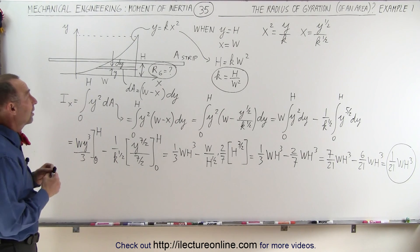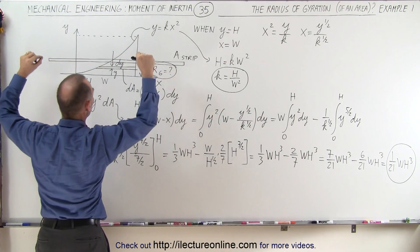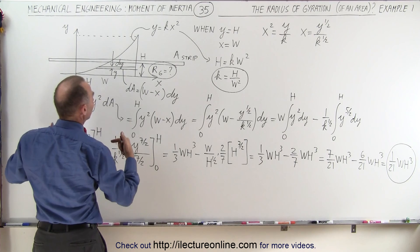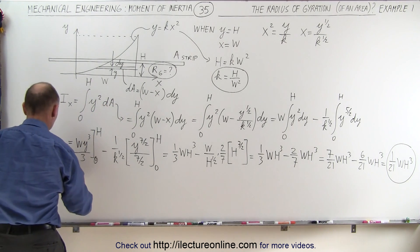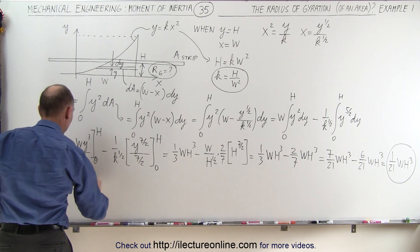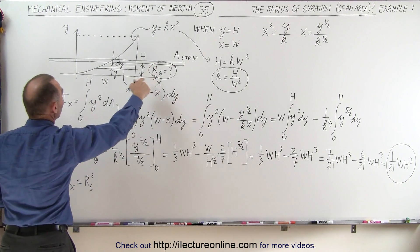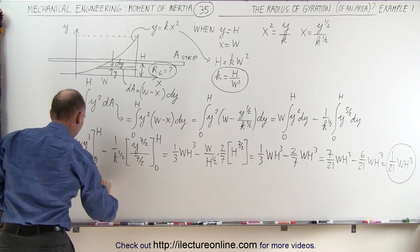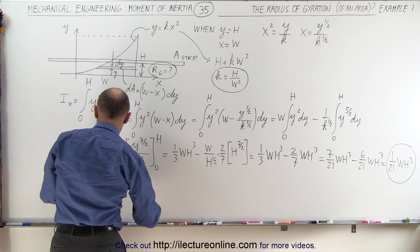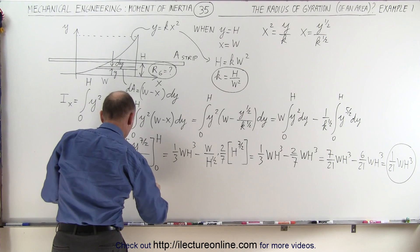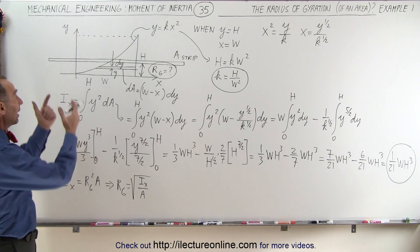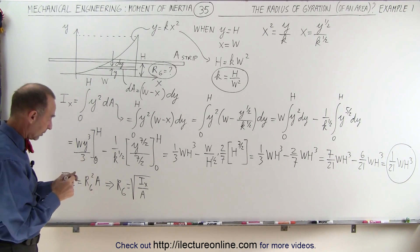Now we need to find the radius of gyration. We take the shape and turn it into a thin strip. The radius of gyration is the distance from the x-axis at which we place the strip so the moment of inertia is the same. This means I_x equals the radius of gyration squared times the area, so the radius of gyration equals the square root of the moment of inertia divided by the area. We still need to find the area.